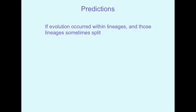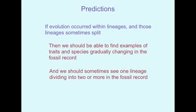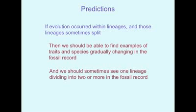Another prediction is that if evolution occurs within lineages and those lineages sometimes split, then we should be able to see that in the fossil record. We shouldn't just see a progression from simple organisms to complex ones with the simpler ones remaining — we should be able to trace a single lineage and see it changing over time. After all, that's what evolution is. And we should be able to see those lineages split so that we have an ancestor that divides into several descendants. I could give you 300 or 400 cases of this, but I'll just give you a couple to hopefully convince you.